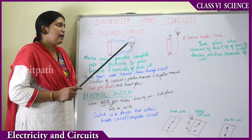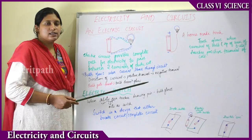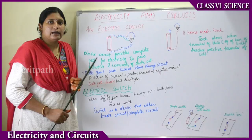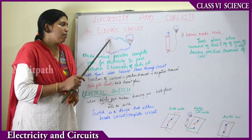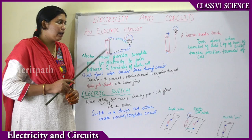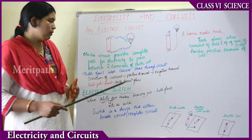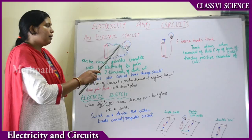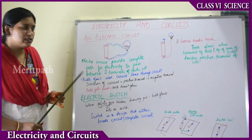For the bulb to glow, an electric circuit needs to be completed and there must be flow of electricity. For the circuit to complete, all the terminals should be properly connected with wires. The flow of electricity in an electric circuit is from the positive terminal to the base of the bulb and from the base of the bulb to the negative terminal. The bulb glows when current flows through the circuit. The direction of current is always from the positive terminal to the negative terminal.